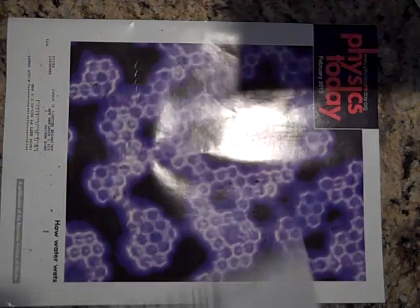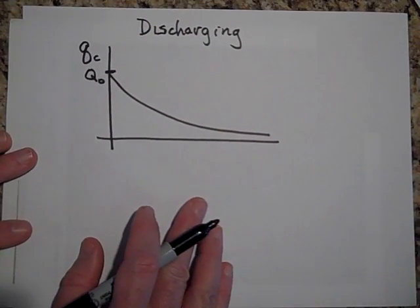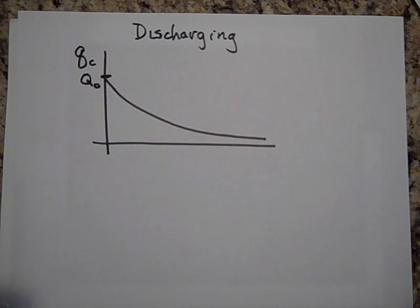Okay, so if we do have a discharging capacitor, if you ask the question, how long is it going to take before it gets to zero, the answer is infinity. It's going to take an infinite amount of time. At least theoretically, it's going to take an infinite amount of time.